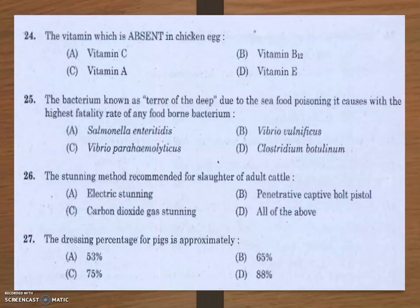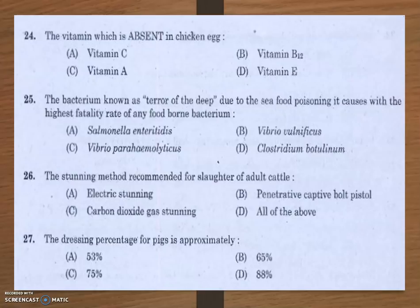The answer is vitamin C. Vitamin C is absent in chicken egg. The remaining vitamins — vitamin B12 (cobalamin), vitamin A (retinol), and vitamin E (tocopherol) — are present in chicken egg, along with selenium, vitamin B5, vitamin B2, and minerals such as calcium, iron, potassium, zinc, and manganese.